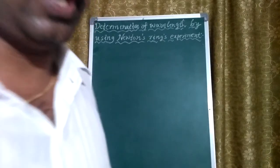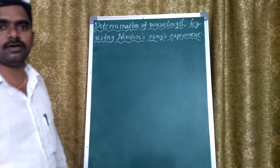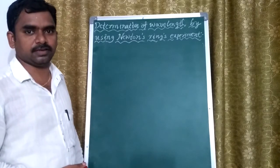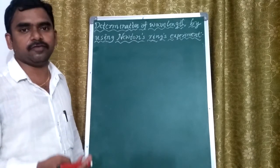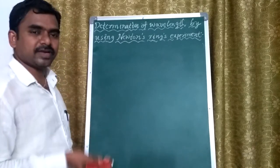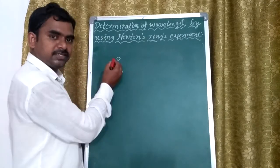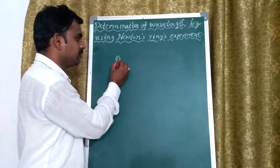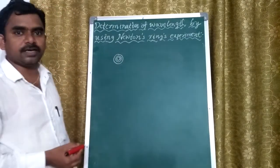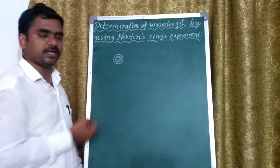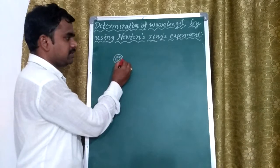Previously, we have derived the equation or formula for the radius of the dark ring in terms of the number of the ring, the radius of curvature of the given planoconvex lens, and the wavelength of the source of light. As we know, for a reflected system, at the center we can observe a dark spot. From that center, we can observe successive concentric bright and dark rings. The bright rings are due to constructive interference and the dark rings are due to destructive interference. There are so many rings that exist.